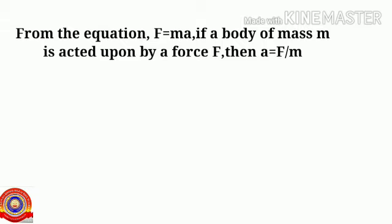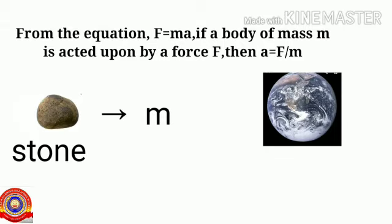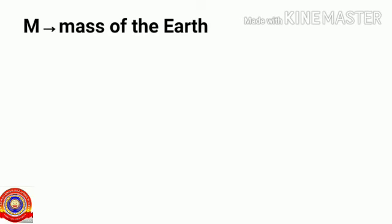From the equation F = ma, if a body of mass m is acted upon by a force F, then acceleration a = F/m. Consider a stone of mass m falling down. Let capital M be the mass of the earth and small m the mass of the stone.